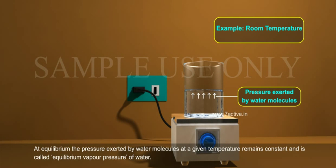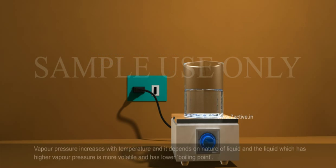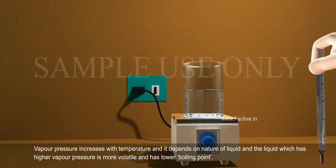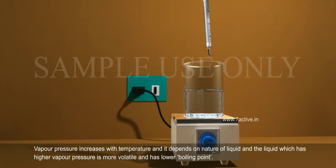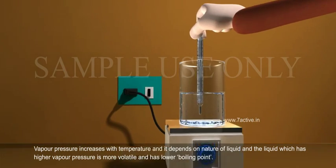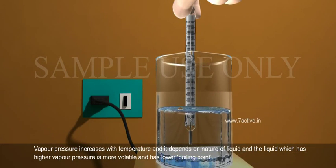At equilibrium, the pressure exerted by water molecules at a given temperature remains constant and is called equilibrium vapour pressure of water. Vapour pressure increases with temperature and depends on the nature of the liquid. A liquid which has higher vapour pressure is more volatile and has lower boiling point.